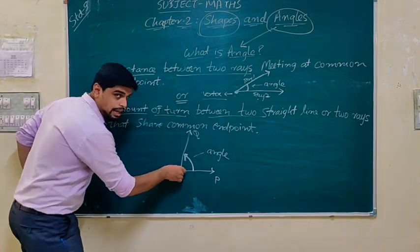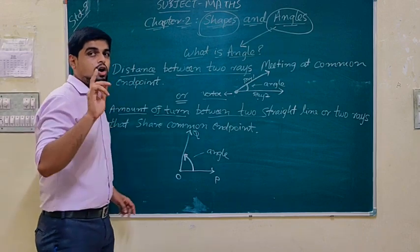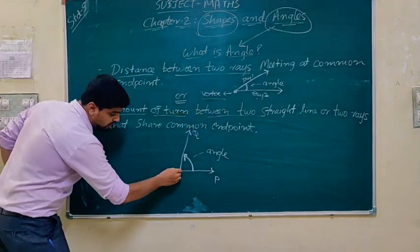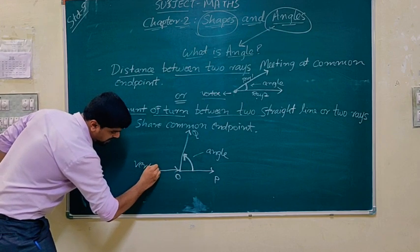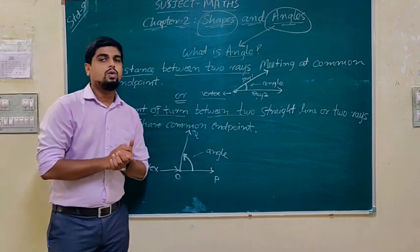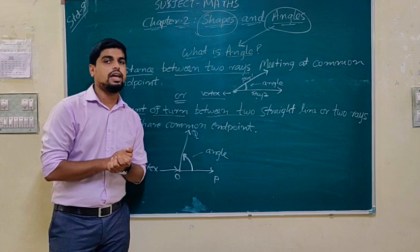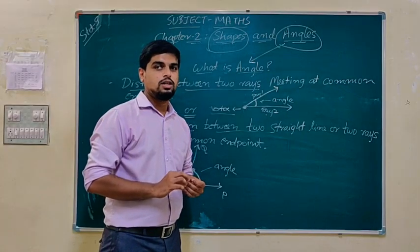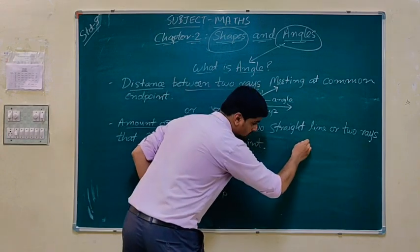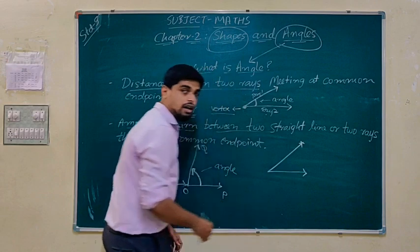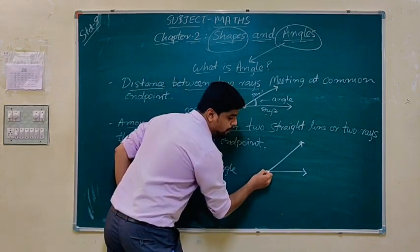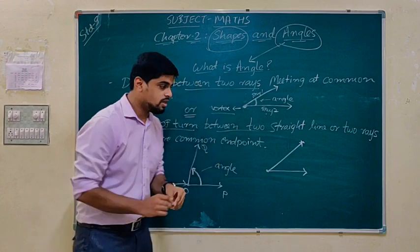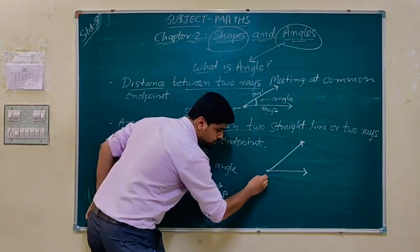These are the two common definitions of angle which you will find in various tests. The first definition is: the distance between two rays. Another definition is: the amount of turn between two rays. All angles have a common end point, and this common point is known as the vertex. Point O is known as the vertex. We can simply say that an angle is a figure formed by two rays with a common end point.